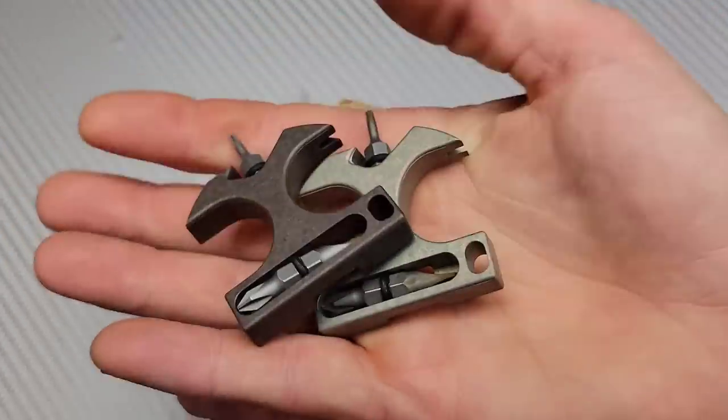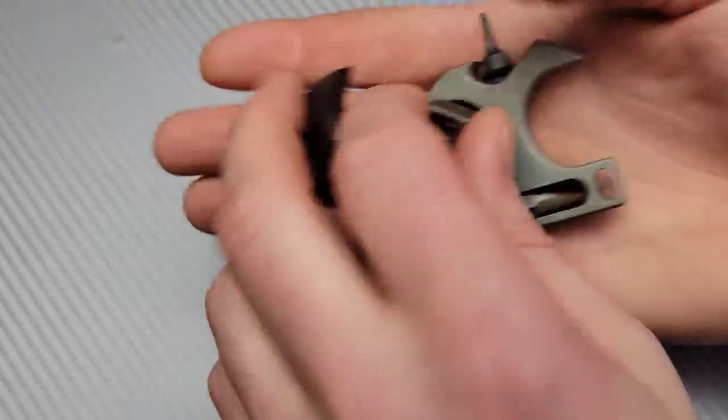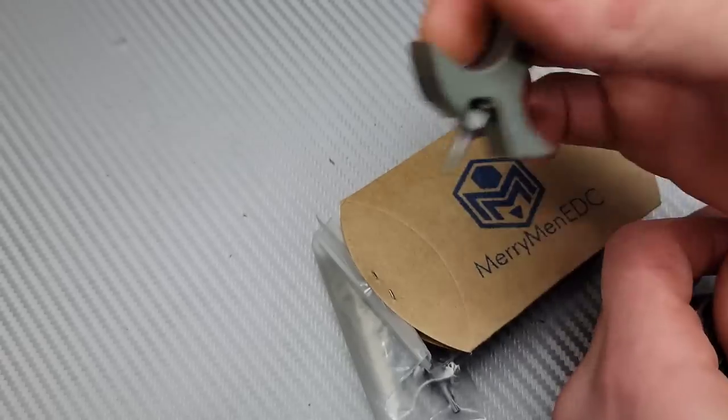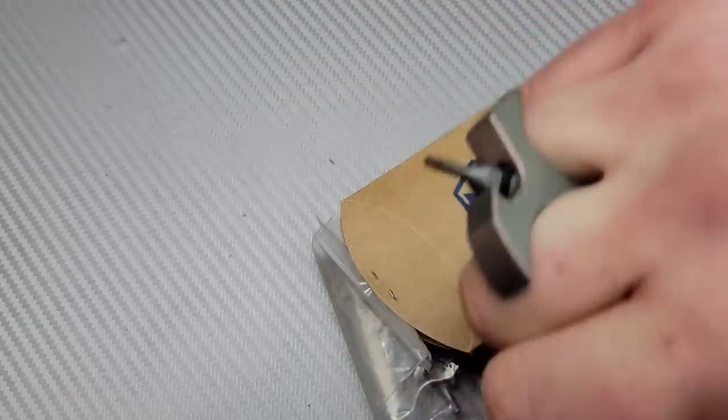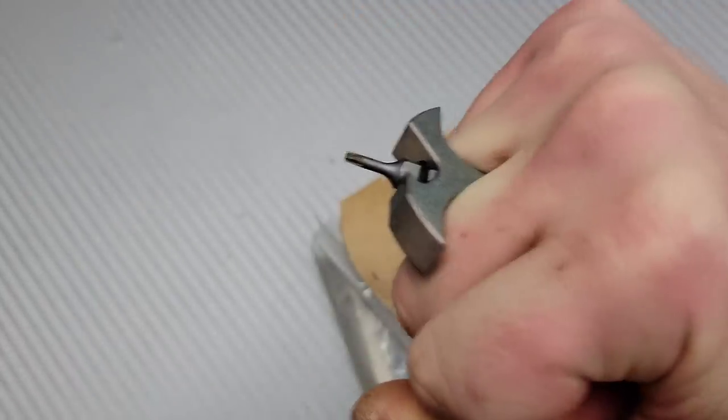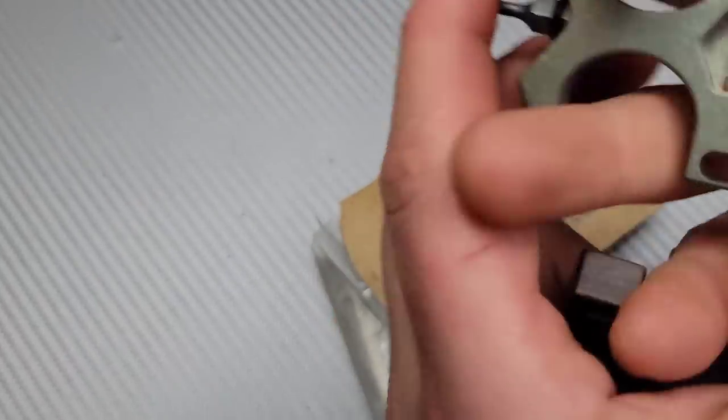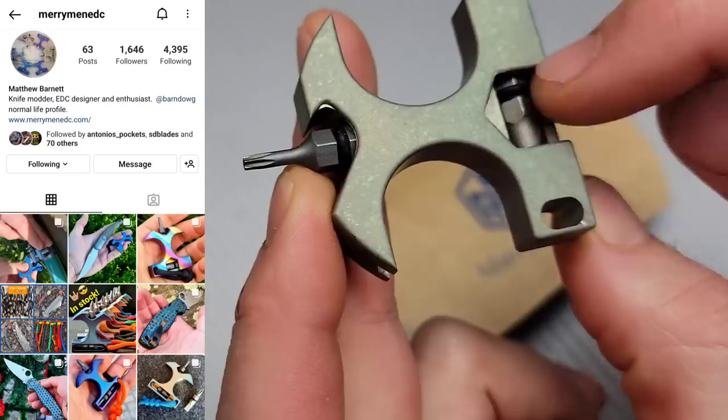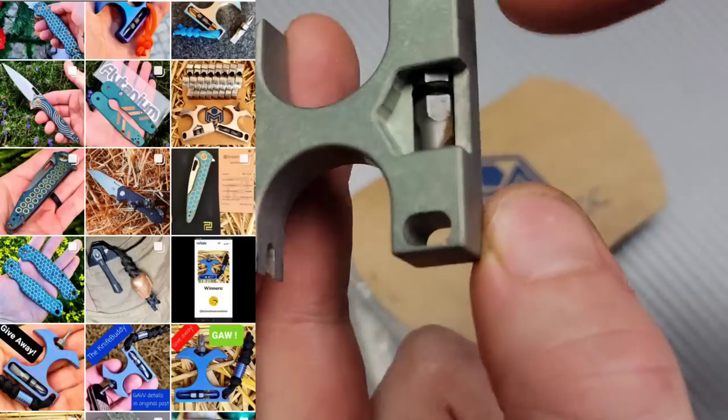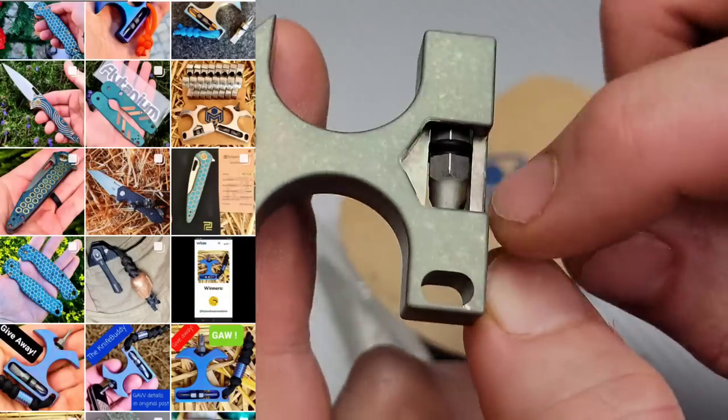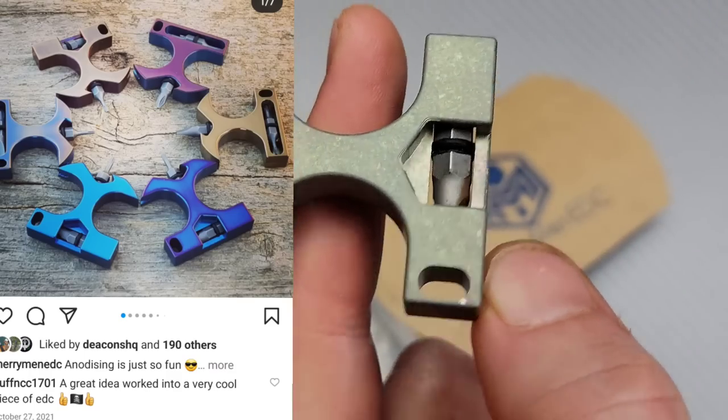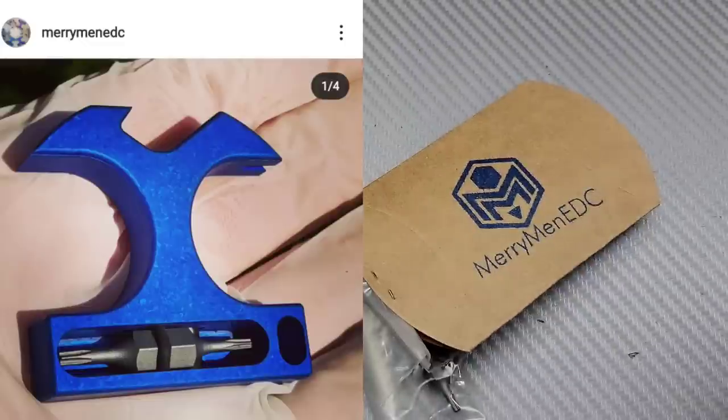Next is the Merry Men EDC. I recently showed these on my channel, they sent me and Kara one. It's basically a multi-tool little driver. Obviously it's also a little knuckler, but besides that we have a wrench bit, I guess right here. I'm not sure the size, let me measure it really quick.